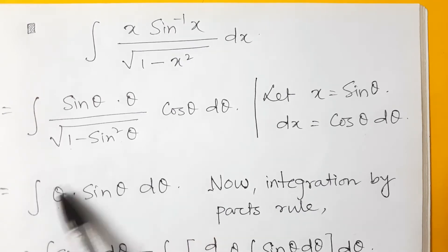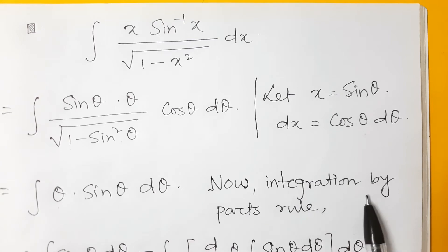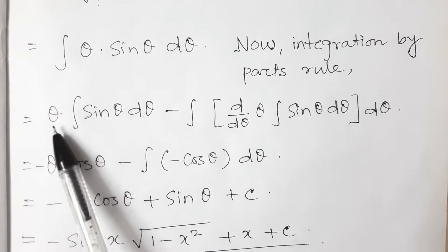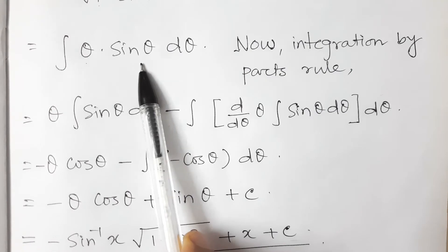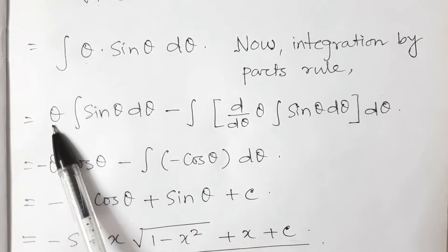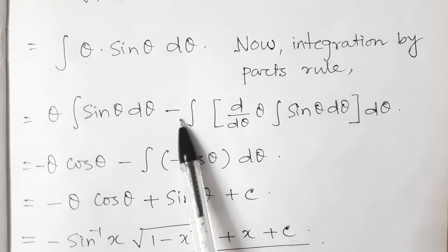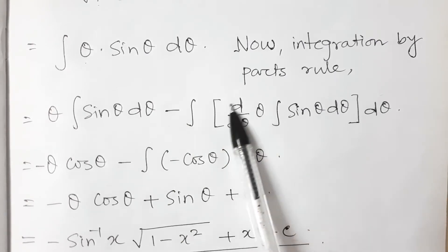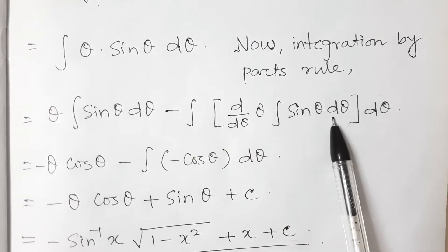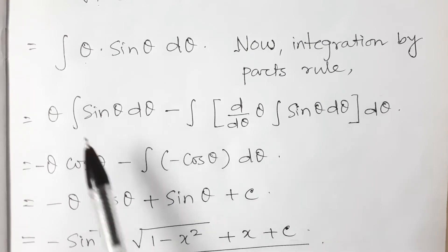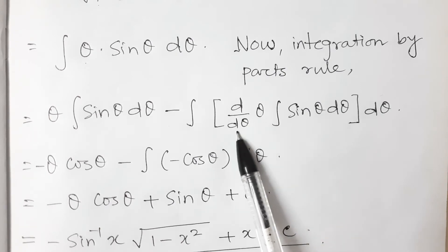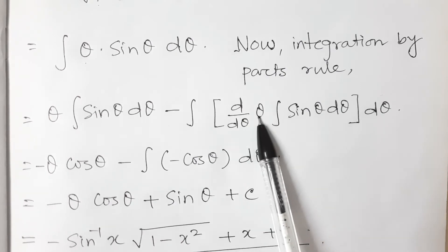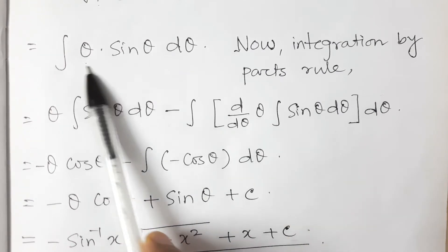Now we will use the integration by parts rule. Here θ is the first function and sin θ is the second function. So it is: first function × integration of second function, minus integration of (differentiation of first function × integration of second function). The integration of sin θ is −cos θ, and the differentiation of θ with respect to θ is 1.